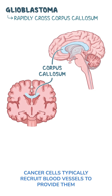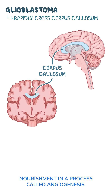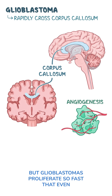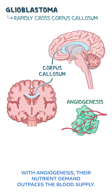Cancer cells typically recruit blood vessels to provide them nourishment in a process called angiogenesis. But glioblastomas proliferate so fast that even with angiogenesis, their nutrient demand outpaces the blood supply.